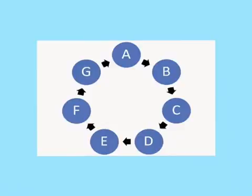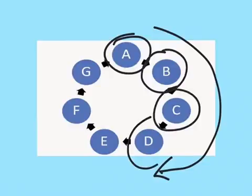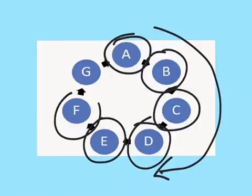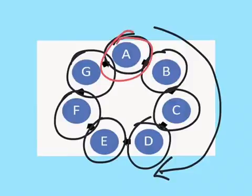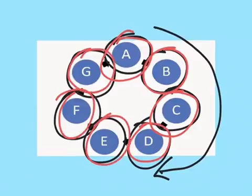This can be represented if we put the letters in a clock formation. Starting with the letter A and moving in a clockwise direction, we can go to B, C, D, E, F, G. Then we will start again with A, B, C, D, E, F, and G, and then so on.